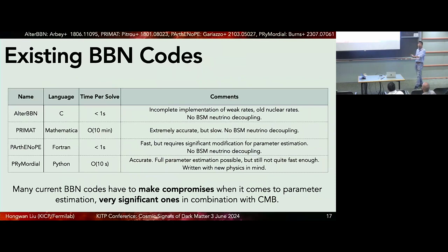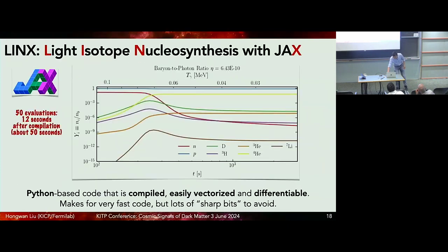For a lot of the analyses that are out there, whenever you see a BBN-CMB joint analysis or even a BBN-only analysis, you should keep in mind that they all have to make compromises when it comes to parameter estimation. The ideal situations that I showed you earlier, they're not exactly doing that, they have to make some kind of approximation to get there. If they're combining with CMB, you get even more severe approximations. It's not that these results are necessarily incorrect, but now with the new code that we're going to show you, which is called LINX, which stands for Light Isotope Nuclear Synthesis with JAX, we can actually do these calculations really quickly. You can do the full parameter estimation that I showed you very quickly, so you don't actually have to compromise on anything.